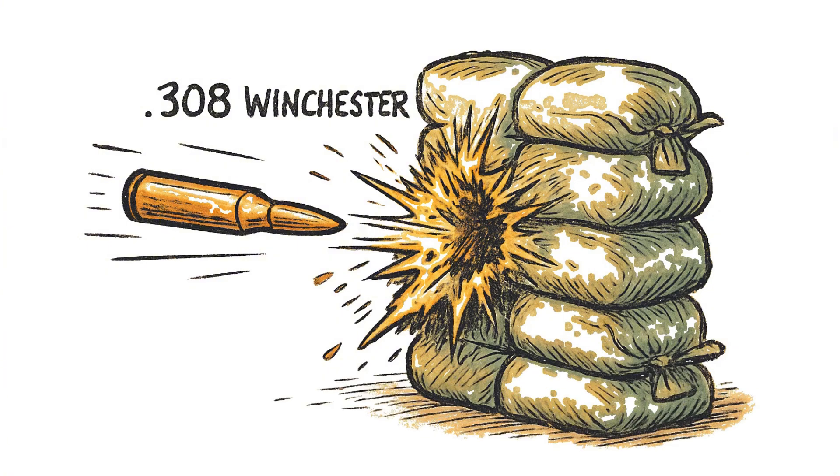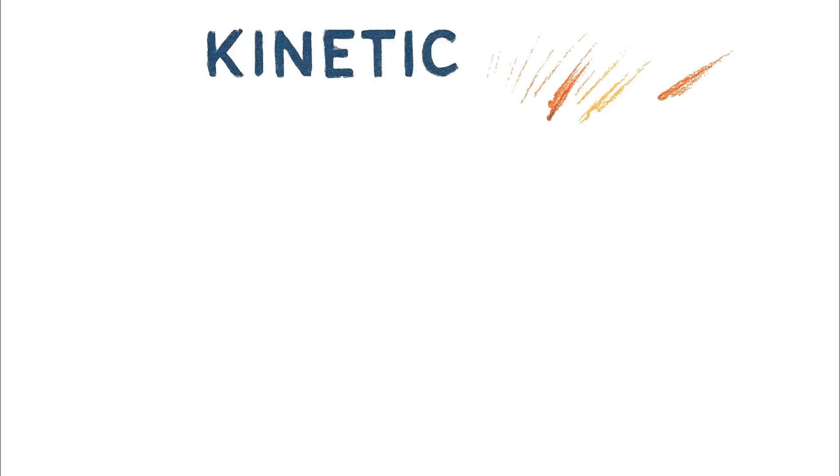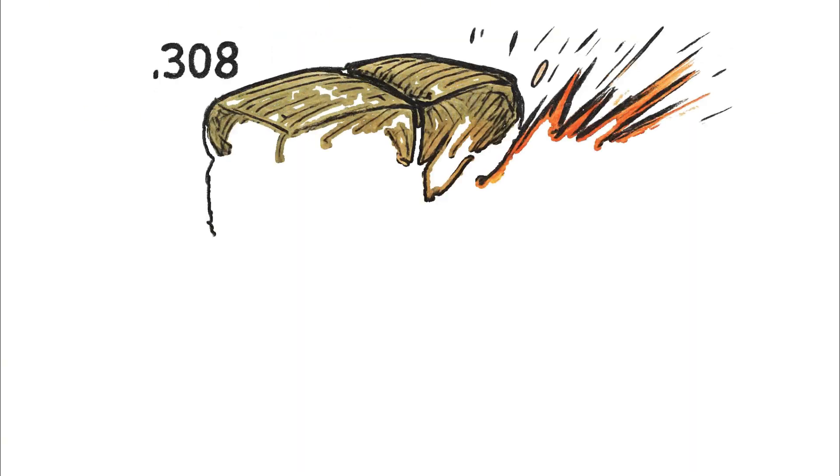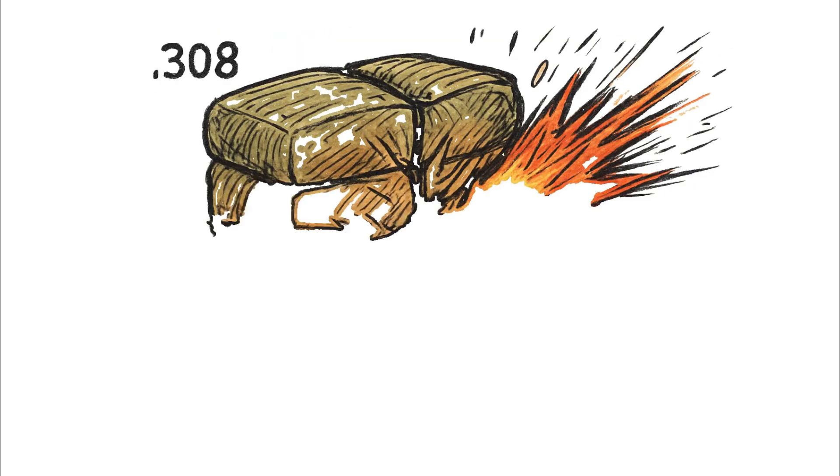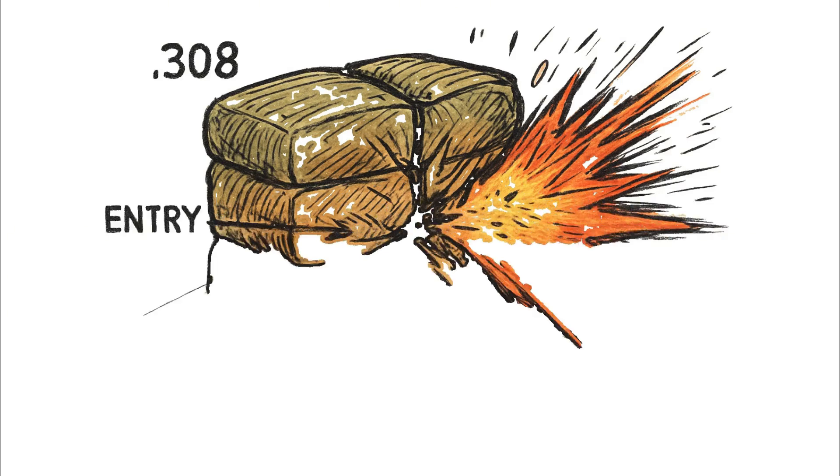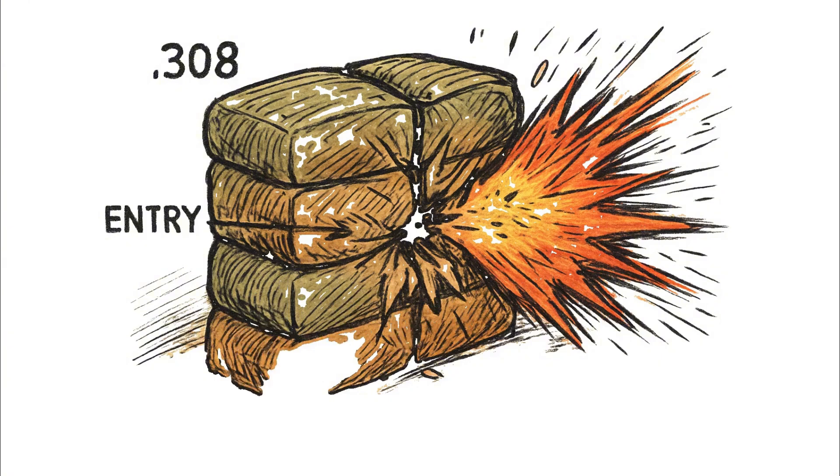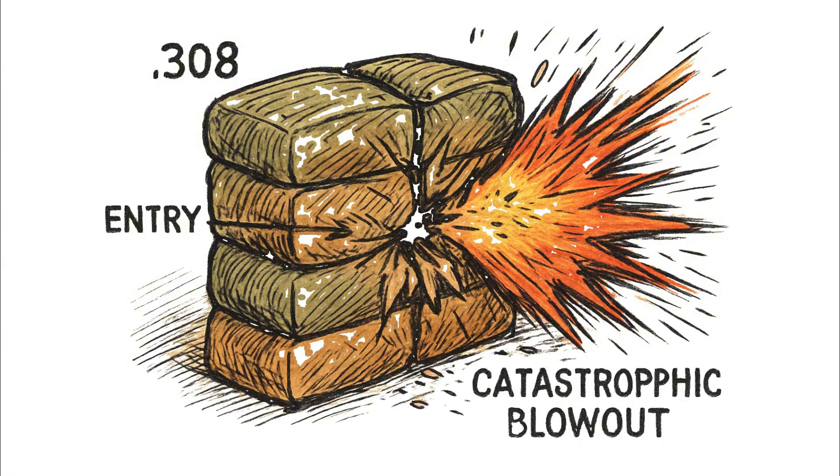Observe the kinetic energy transfer as the impact alone shifts the bags. The entry is depicted as a ragged tear right where the four corners met, and the exit is a catastrophic blowout, because the bullet didn't just pass through, it violently tore its way down the path of least resistance, ripping the bags open and destroying the integrity of the wall.